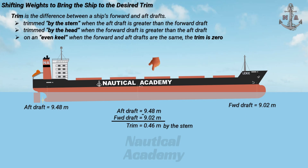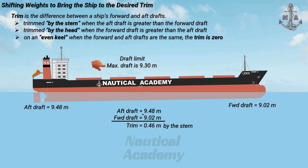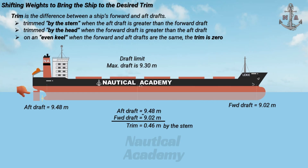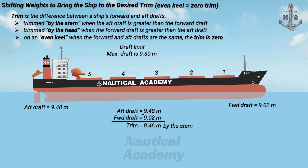After loading, the ship did not achieve the desired trim. Assuming there is a draft limit where the maximum draft is 9.30 meters, the aft draft exceeded this limit. To maximize the ship's loading capacity, instead of discharging cargo, we will shift cargo from the aft cargo hold to the forward cargo hold — specifically from hold number five to hold number two — to bring the ship to an even keel, meaning the desired trim is zero.